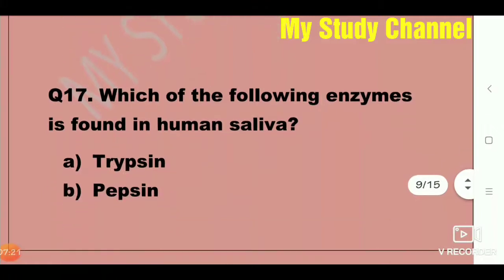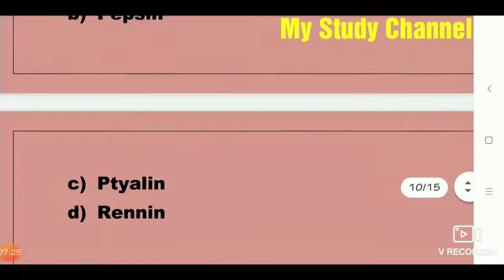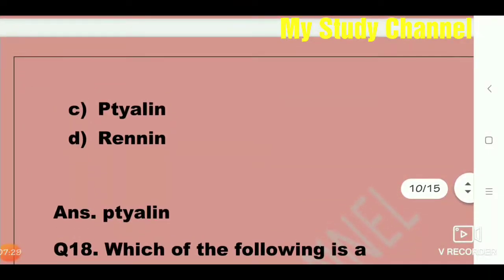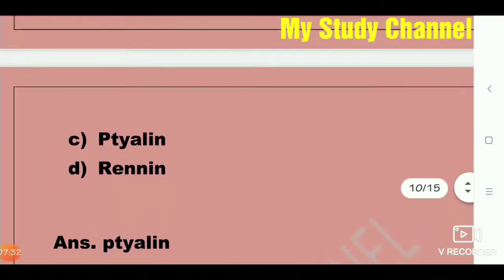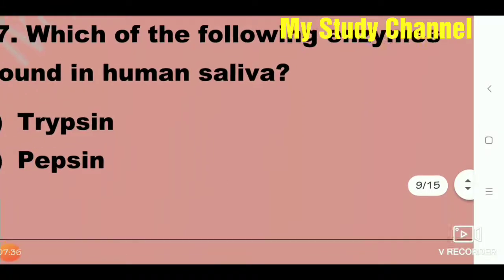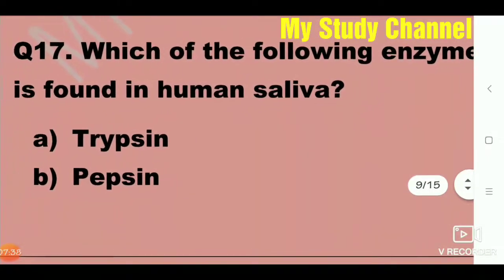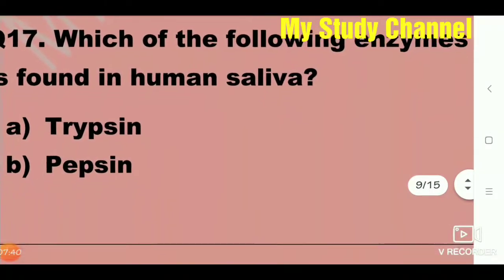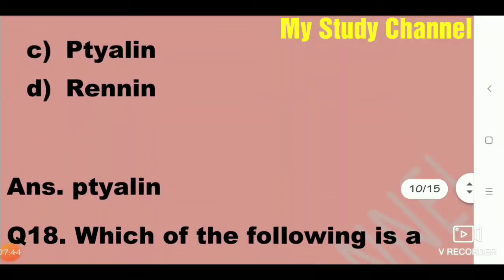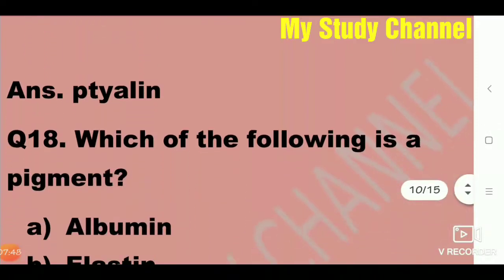Next question: Which of the following enzymes is found in human saliva? The answer is ptyalin. Ptyalin is the enzyme found in human saliva.